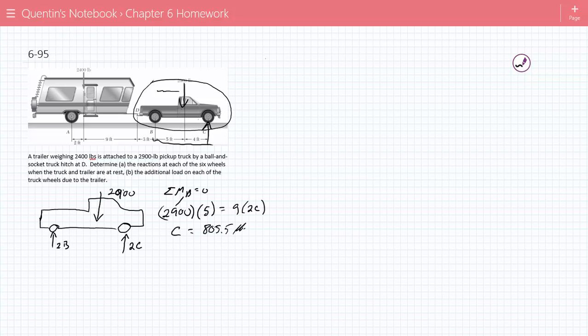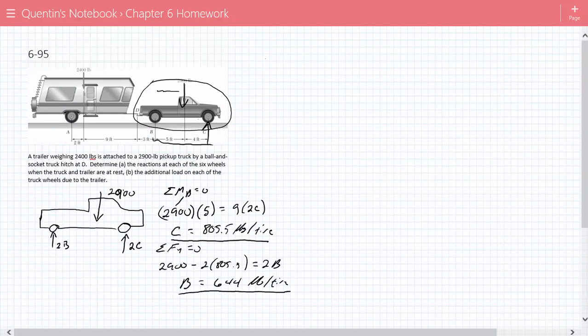So therefore C is equal to 805.5 pounds per tire. And then I'm going to take the sum of the forces in Y equals zero. So now there's 2900 minus 2 times 805.5 is equal to 2B. So therefore B is equal to 644 pounds per tire.